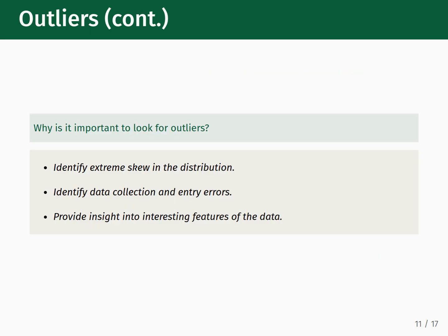Why is it important that we have a systematic method to look for outliers in a data distribution? By having this method, we are better equipped to identify an extreme skew in the data distribution. We can also identify instances of data collection and data entry errors that we could potentially remove or fix. It also provides insight into the interesting features of the data that should be investigated and analyzed in greater detail.